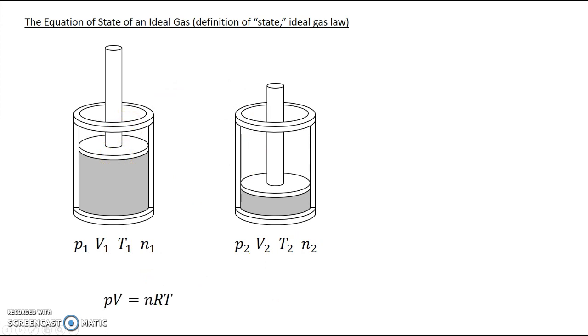If we take the ideal gas law, we could isolate n because it's the same. Dividing by RT gives us this equation. Mathematically, we can then plug in for n1 and plug in for n2 using this expression. On the left side,